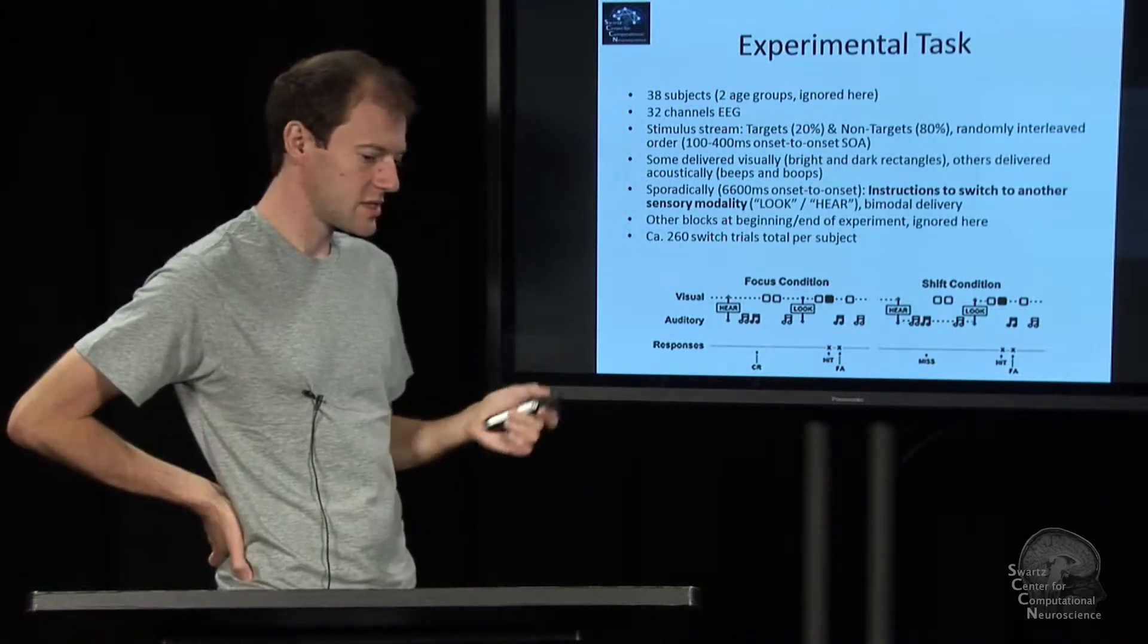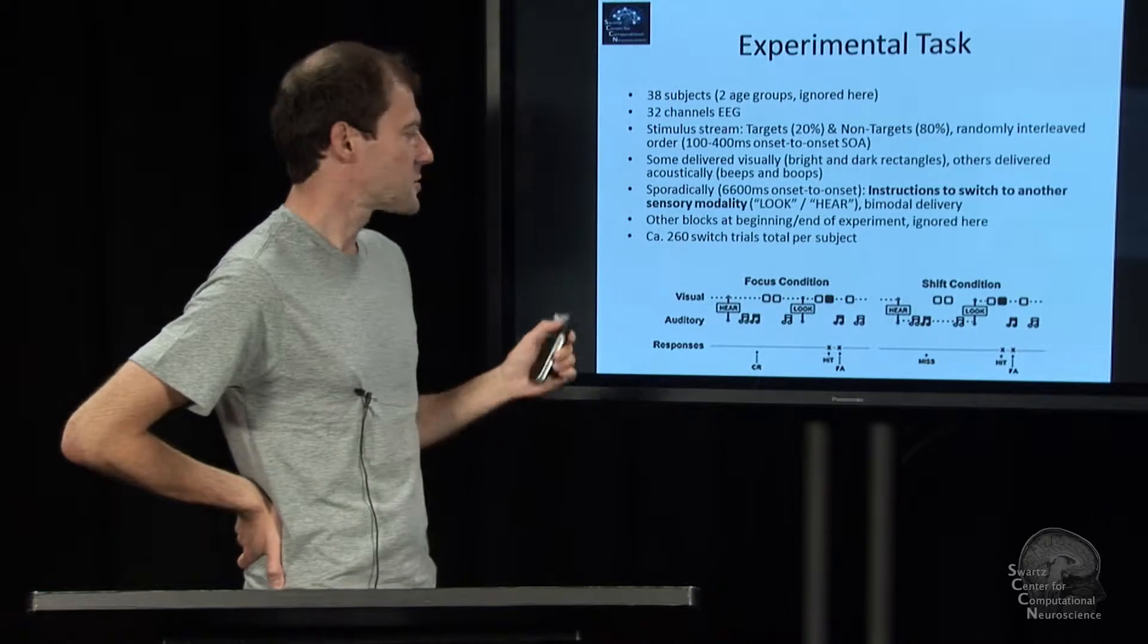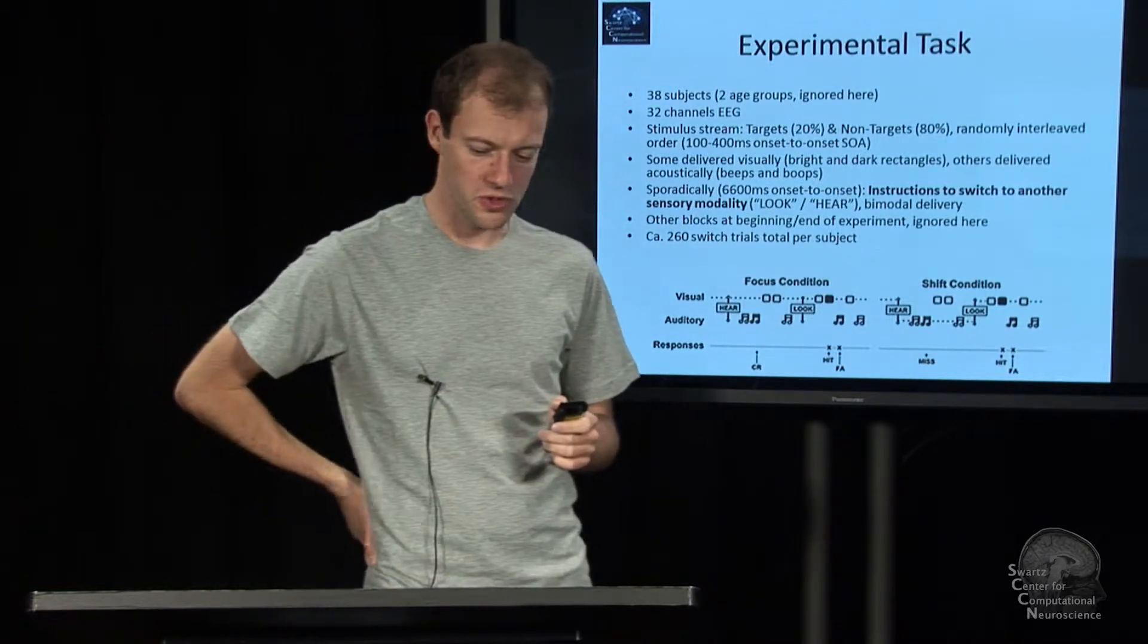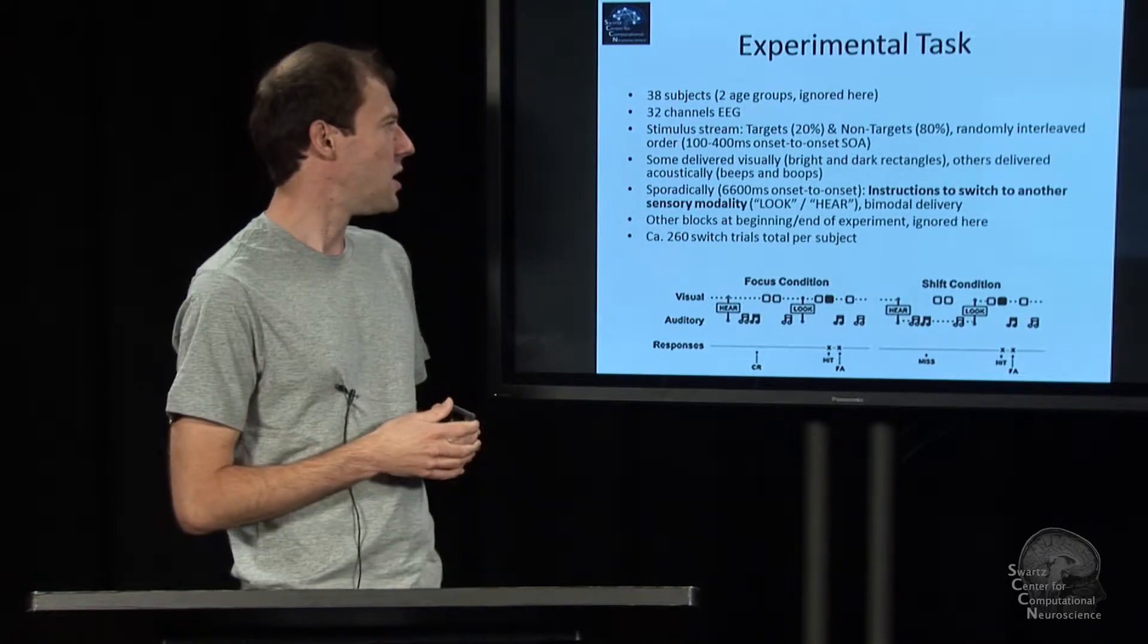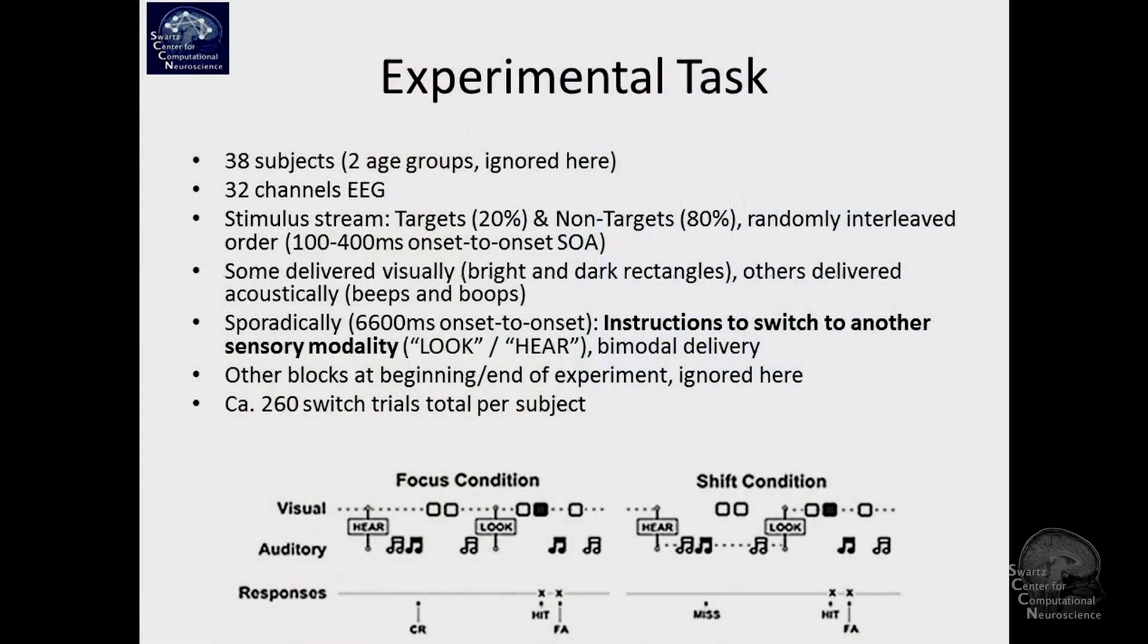So I summarize this somewhat quickly here. We have an experimental task that was collected by Townsend et al. It's 38 subjects who were recorded. And we recorded, or they recorded, 32 channels of EEG.